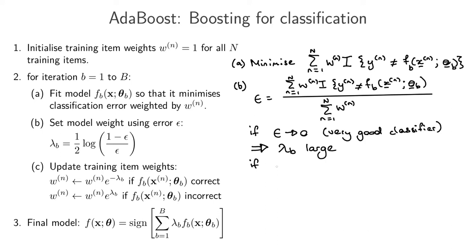Now let's think about what epsilon will be for a very bad classifier. At first you might think epsilon will be very large — basically one, getting all points wrong. But a classifier that gets every single training data point wrong can actually be turned into a very accurate classifier by simply predicting one whenever it predicts minus one and vice versa. So you will never get epsilon equal to one. The worst classifier you can get is just tossing a coin at every training item, and if you do that, epsilon will go towards a half.